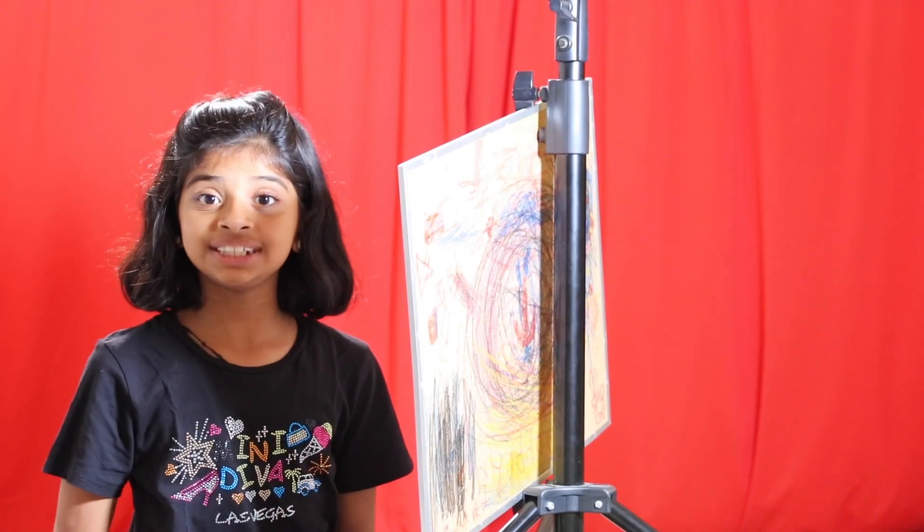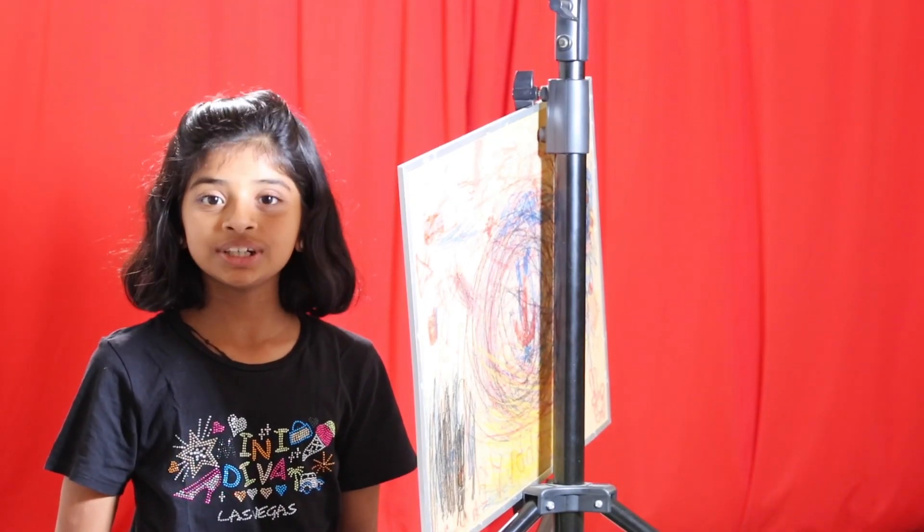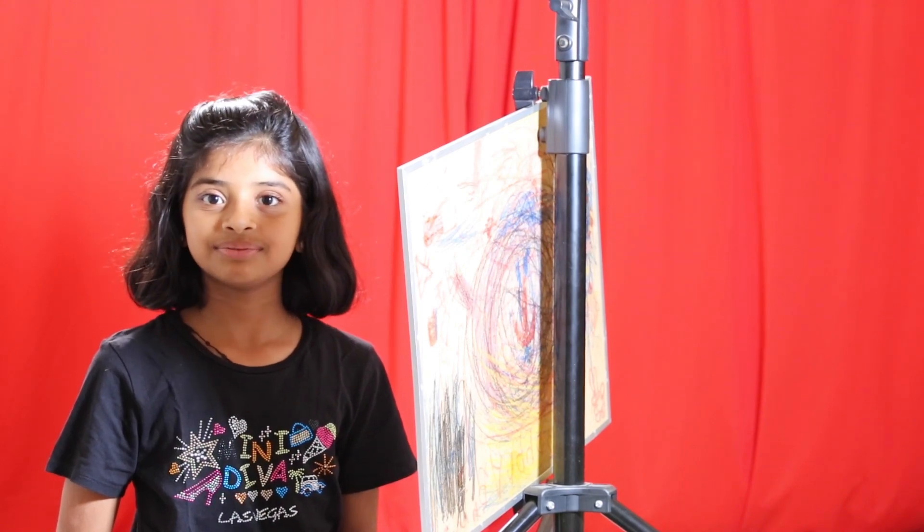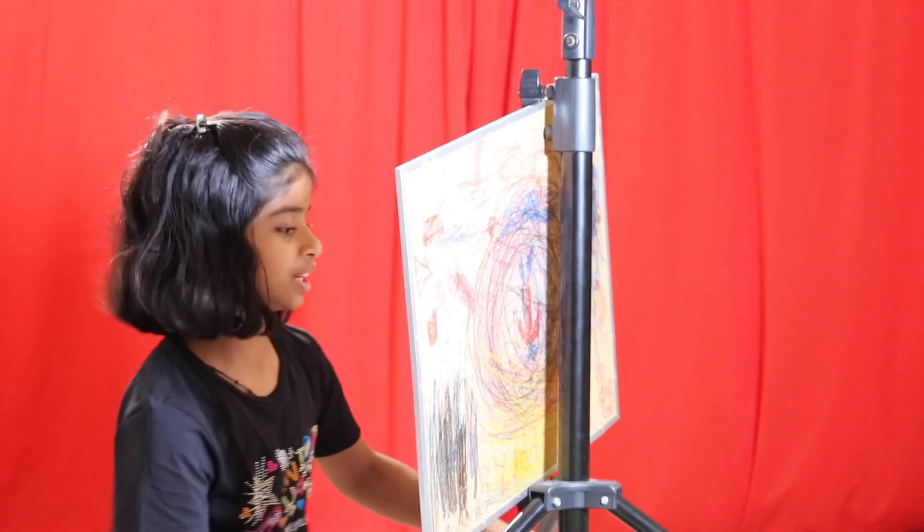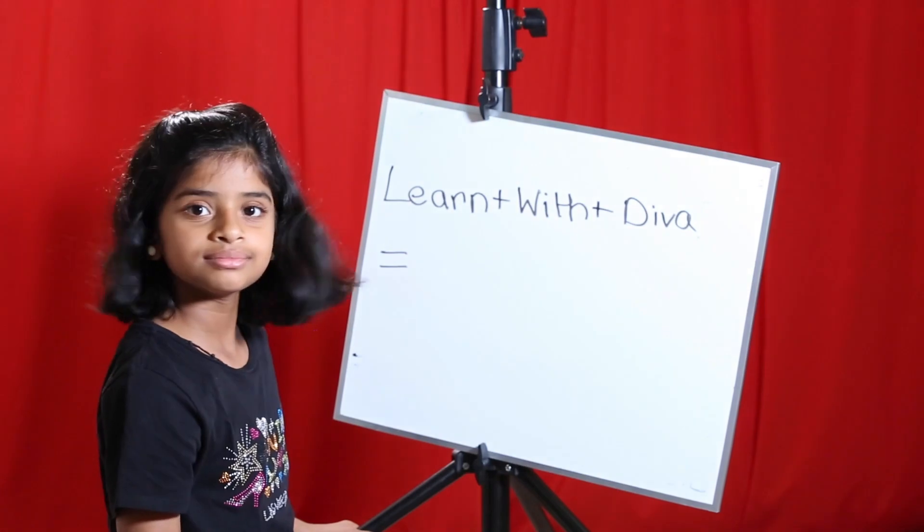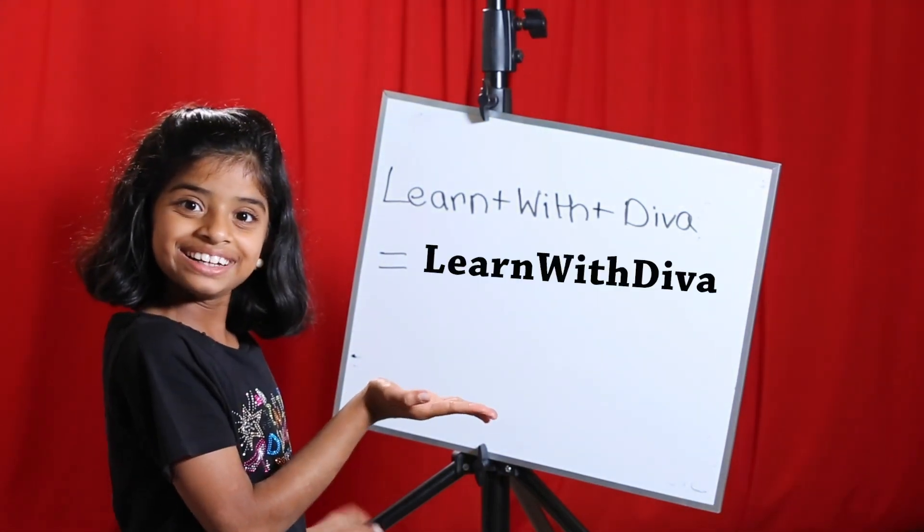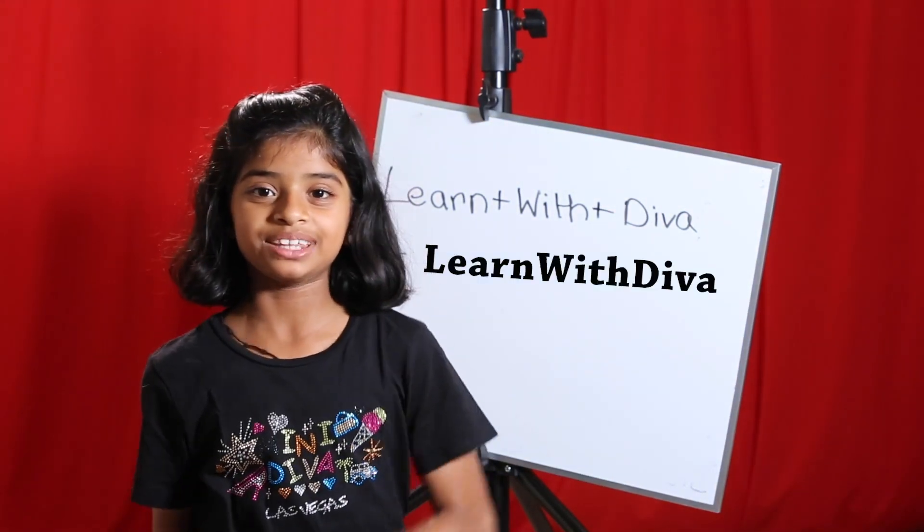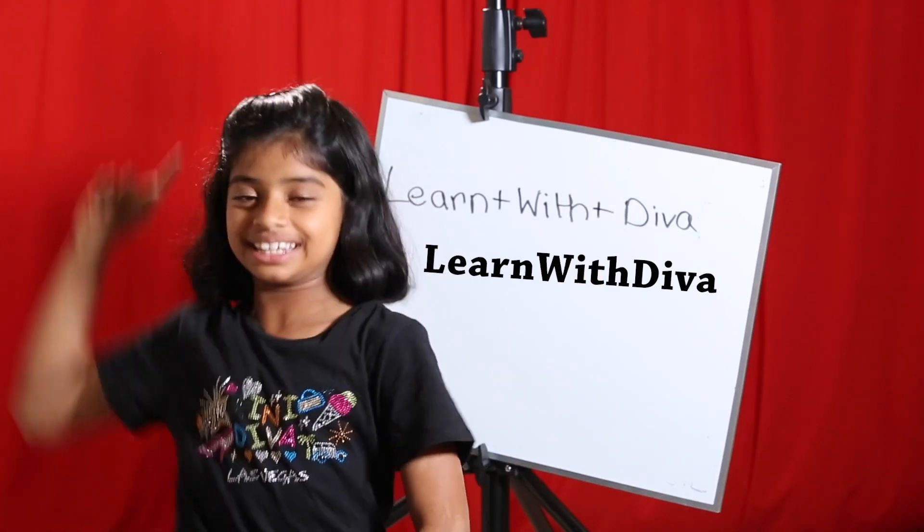Quick! Do you know 65 square? 4,225. Well, do you know what this is? Learn with Diva! To learn more math together, please subscribe to my channel and keep learning!